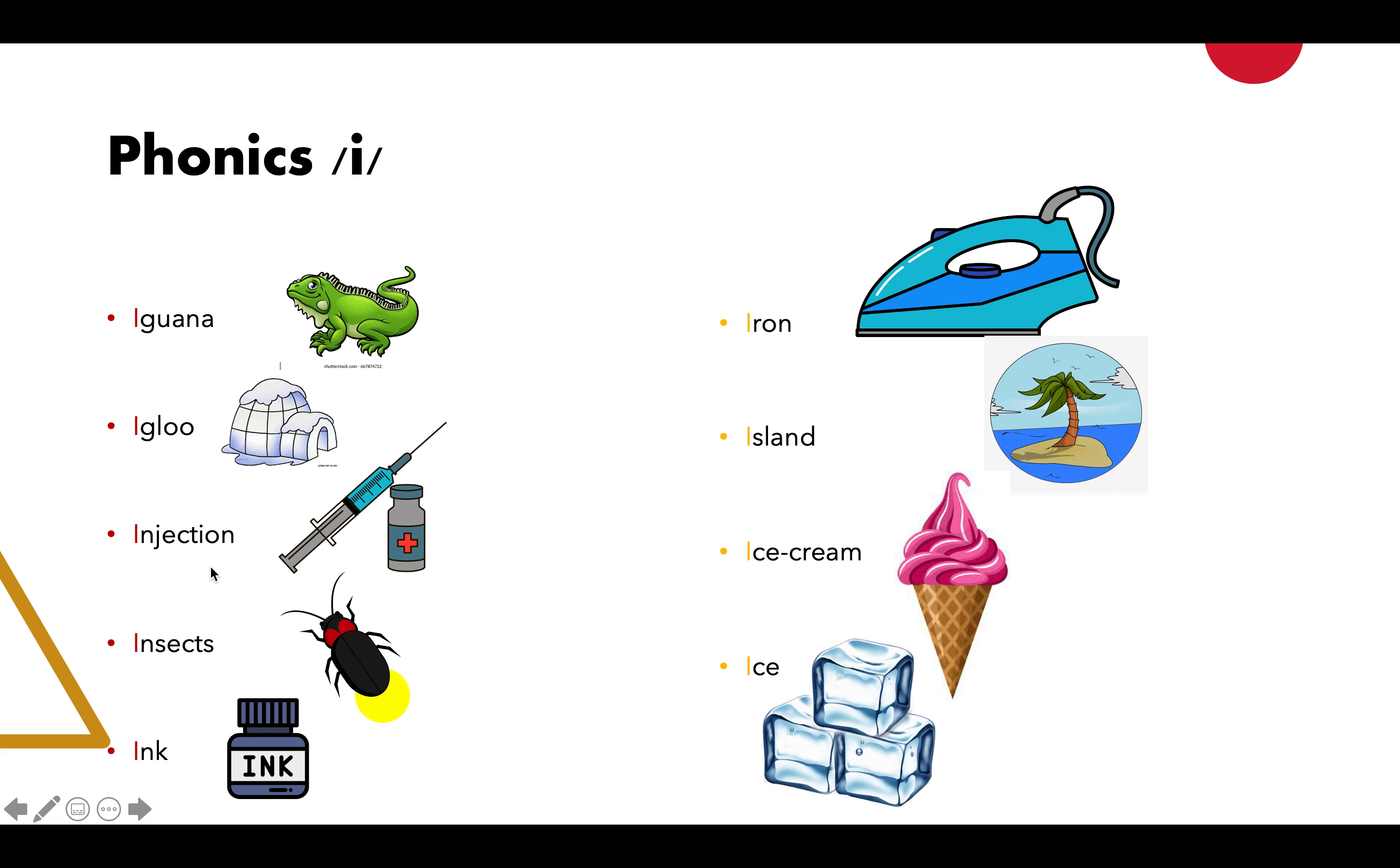Walaupun dia phonics /i/ tapi bunyi dia adalah /e/. Iguana, igloo, injection, insect, ink - sebutan dia /e/ di depan. Tetapi this one sebutan dia sedikit berbeza. This is iron, iron, island, ice cream, ice.